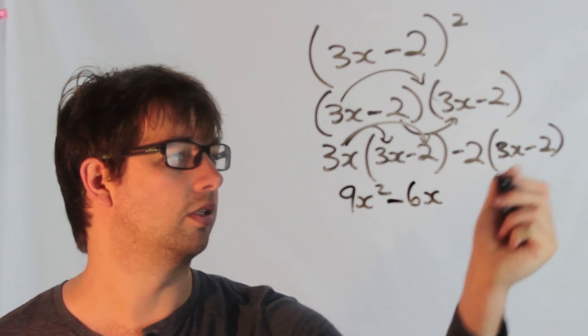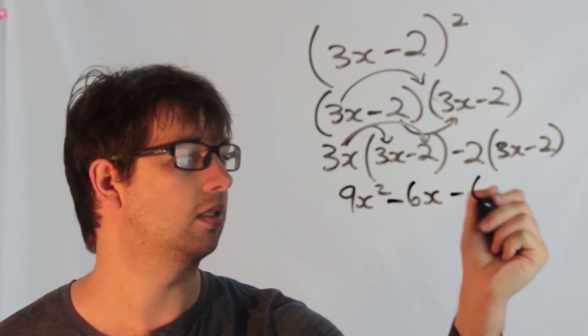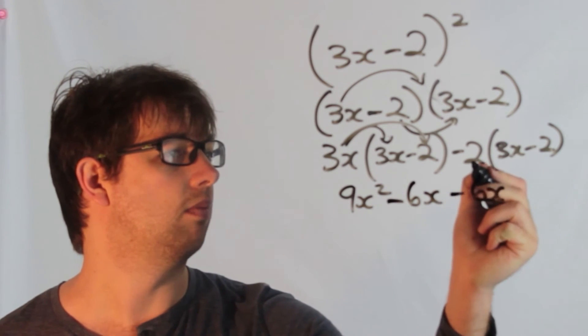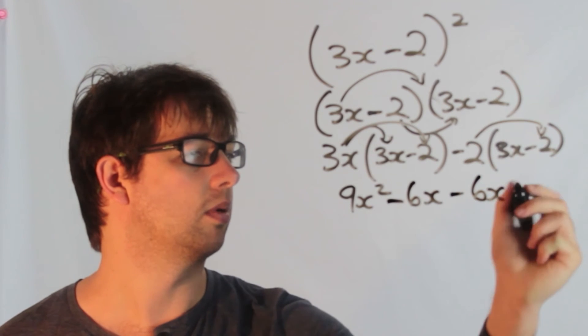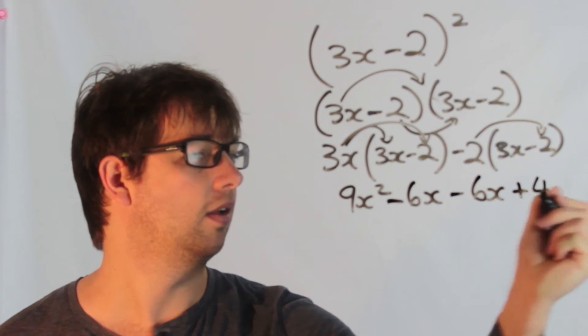Minus 2 times 3x is minus 6x. And then minus 2 times minus 2, that's positive 4.